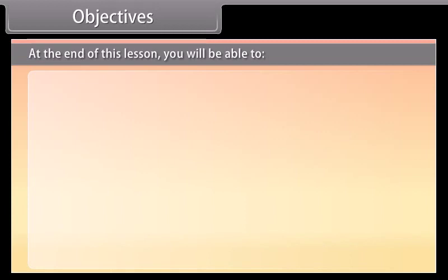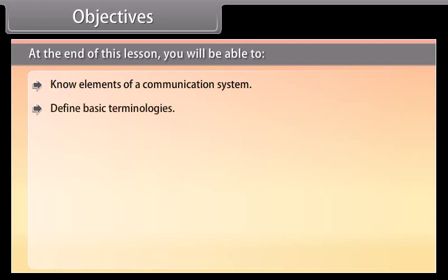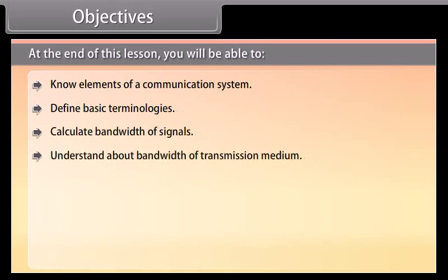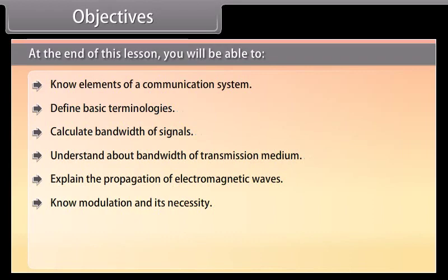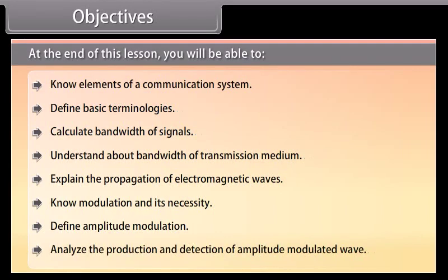At the end of this lesson, you will be able to: know elements of a communication system, define basic terminologies, calculate bandwidths of signals, understand bandwidth of transmission medium, explain the propagation of electromagnetic waves, know modulation and its necessity, define amplitude modulation, and analyze the production and detection of an amplitude modulated wave.